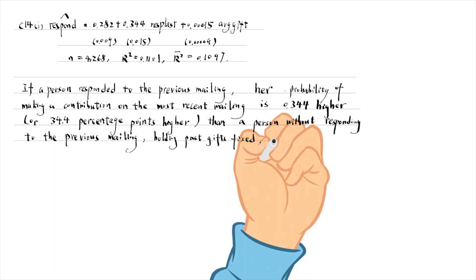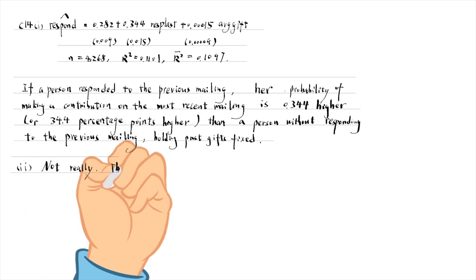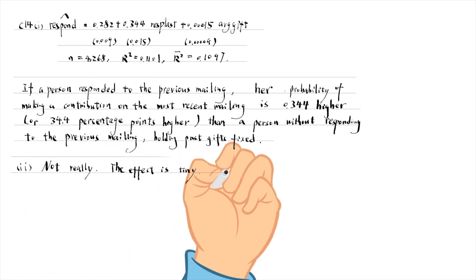My answer to part 2 is not really. The average value of past gifts has a tiny effect on the probability of responding. 18 more Dutch guilders, which is the approximate sample mean, increase the probability by only 0.3 percentage points.